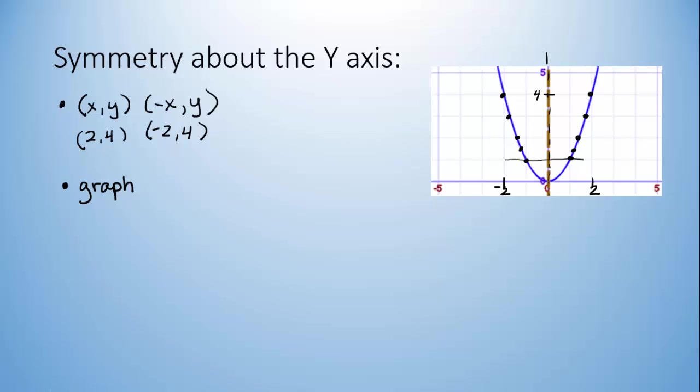The third way we can tell is using algebra. The equation of this graph is y equals x squared. This graph is symmetric around the y-axis if you can plug negative x into x and you still get the original equation back again. Let's try it.